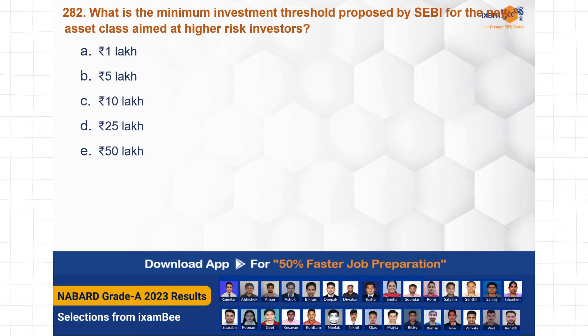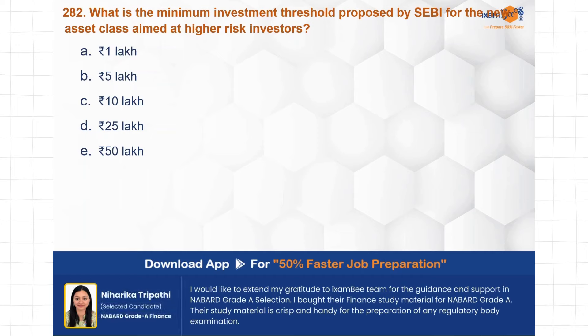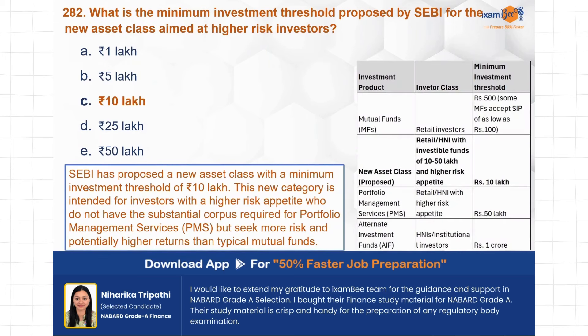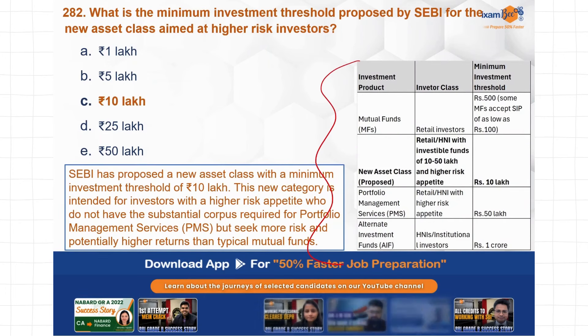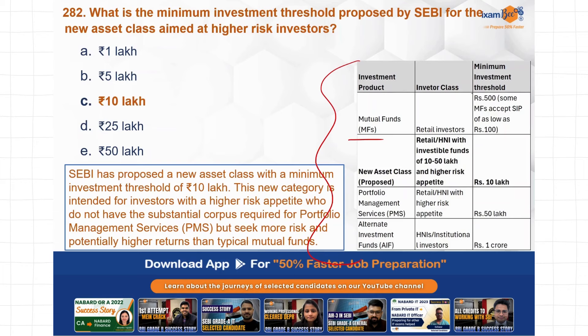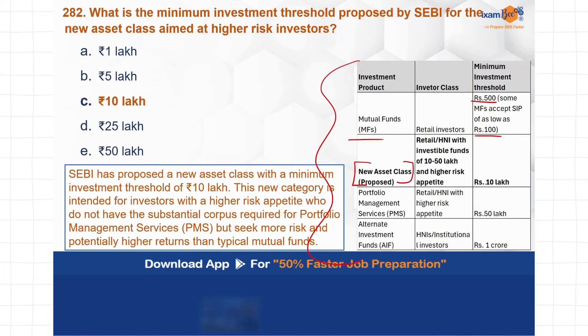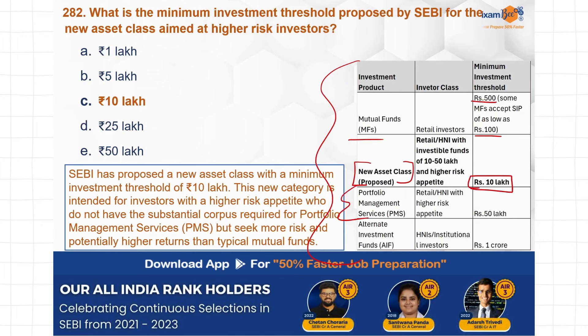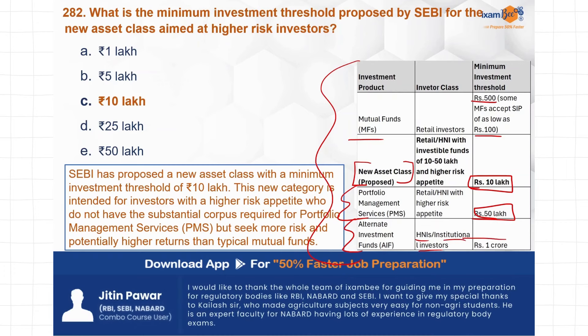Next question: what is the minimum investment threshold proposed by SEBI for the new asset class aimed at higher-risk investors? SEBI recently created a new asset class where retail investors can invest with slightly higher risk, and it offers better returns than other funds. The minimum limit is 10 lakh rupees — option C. As you can see on the chart: mutual funds have a very low minimum (starting from ₹500 or even ₹100), the new proposed asset class requires ₹10 lakh, PMS requires ₹50 lakh, and Alternate Investment Funds (AIF), where only HNIs and institutional investors contribute, have a minimum threshold of ₹1 crore.